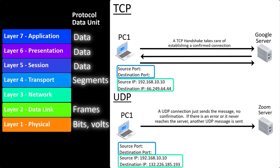What would the source port be for source IP 192.168.10.10? If your answer is 'I have no idea,' then great answer. It's a tough one, unless you are specifically studying networking. Because there are predetermined ranges of ports that source ports can have. They range from 49152 to 65535, and are known as private ports.